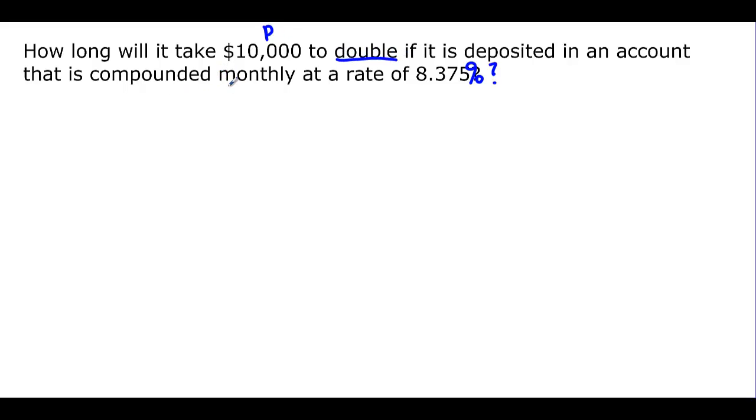The account is compounded monthly, so this is our n. There are 12 months in a year, so n is going to be 12. And then this is our r, but remember we have to put the decimal in there and move the decimal two places, so it's 0.08375. And then this double is actually our A. If we started with 10,000, we would have 2 times that 10,000.